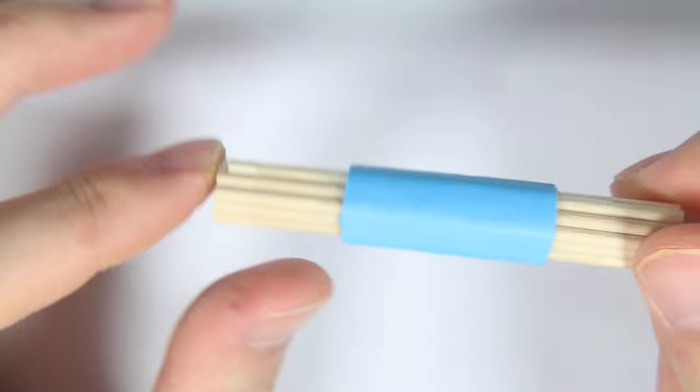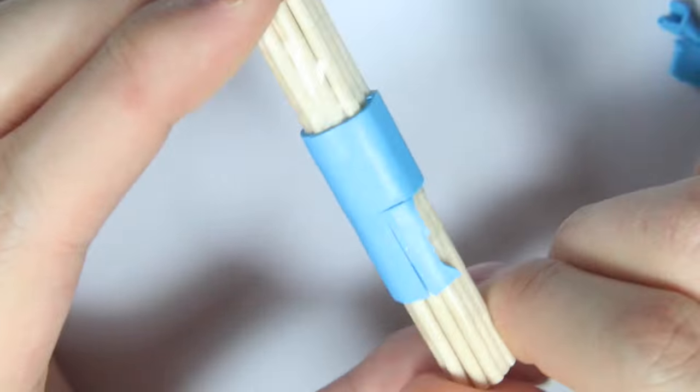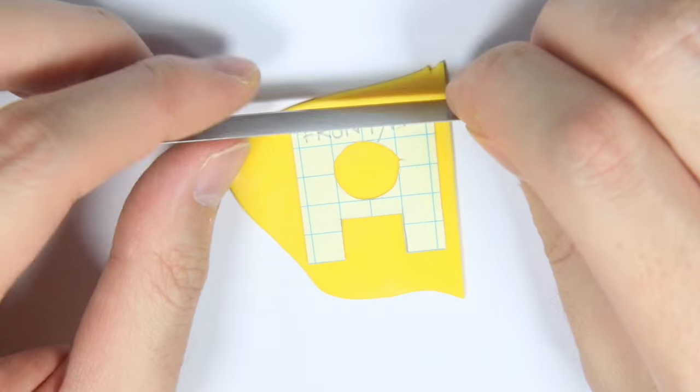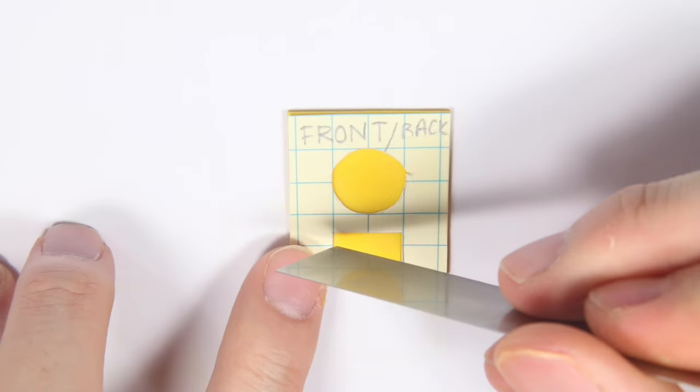Then you want to cut out a square within the pipe so the gashapon or the toy can fall into it. Then you want to carve out the other templates and make two of each: two front back pieces, two side pieces, and two top and bottom pieces.